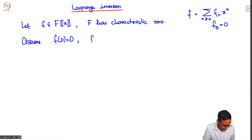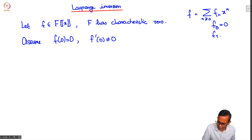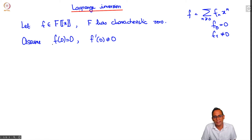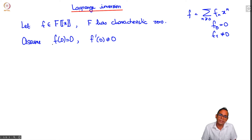Let us also assume that f'(0) is not equal to 0, which means that f_1 is not equal to 0. If you look at all formal power series with these conditions — they take 0 to 0 and have non-zero derivative at 0 — then they form a group under composition. The Lagrange inversion theorem tells us what the inverse of a given series is in this group.